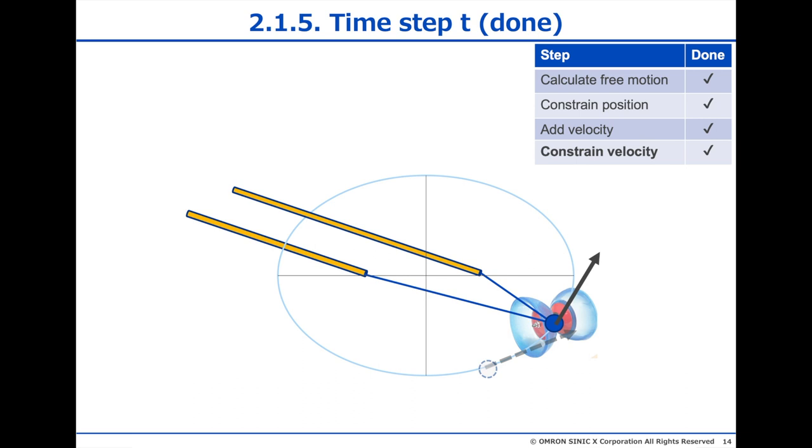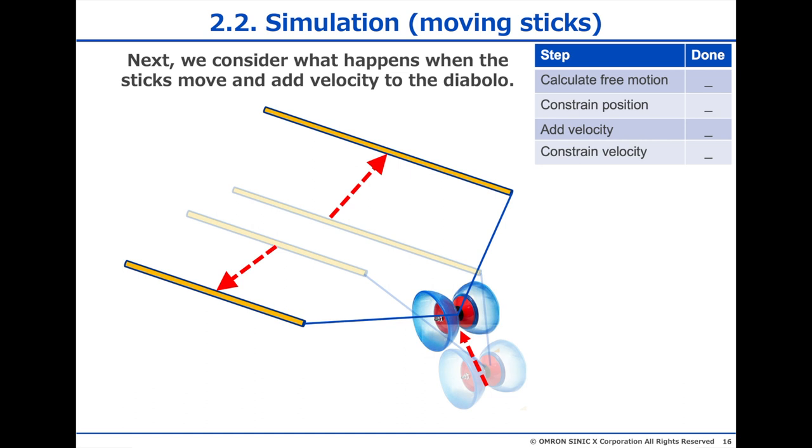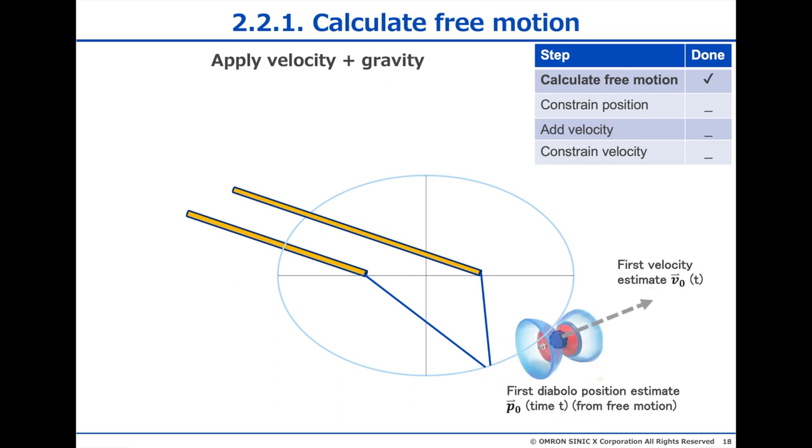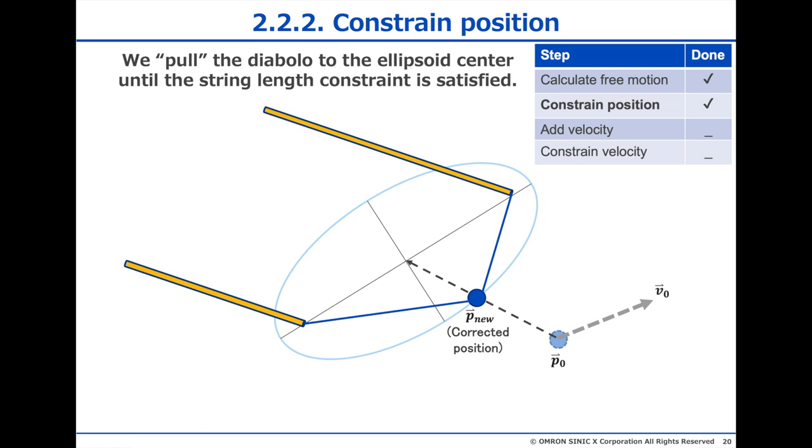Now, let's look at what happens when the sticks move. We start from the same Diabolo state, but then we move the sticks to pull on the Diabolo, like this. Let's calculate what happens. We start at the same state as before. We step forward with the Diabolo using the velocity and gravity like before, but now the sticks have moved, so the next steps change. To get the new position of the Diabolo, we move it towards the new ellipsoid center, until it is on the edge.